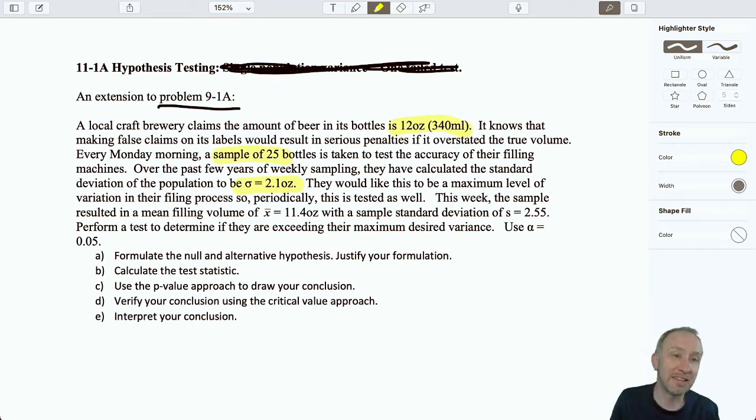They performed some weekly tests where they took a sample of 25 bottles to test their filling machines. Over the past few years of weekly sampling, they've calculated the population standard deviation is 2.1 ounces. They would like this to be the maximum level of variation in their filling process. Periodically, this is tested as well. This week, the sample resulted in a mean filling volume of 11.4 ounces, with a sample standard deviation of 2.55. Perform the test to determine if they're exceeding their maximum desired variance.